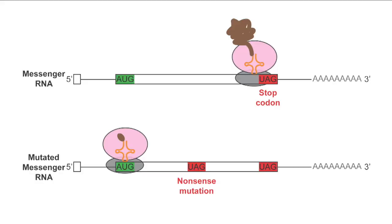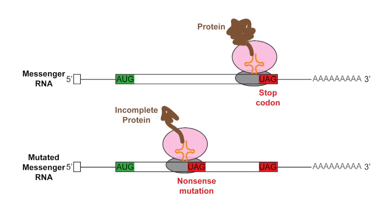These termination factors also play a central role in recognizing and responding to premature termination codons, which can occur through a mutation that improperly introduces a stop codon in the middle of a messenger RNA. These mutations are referred to as nonsense mutations that consequently lead to the production of incomplete proteins, and they are a common cause of many human genetic diseases.